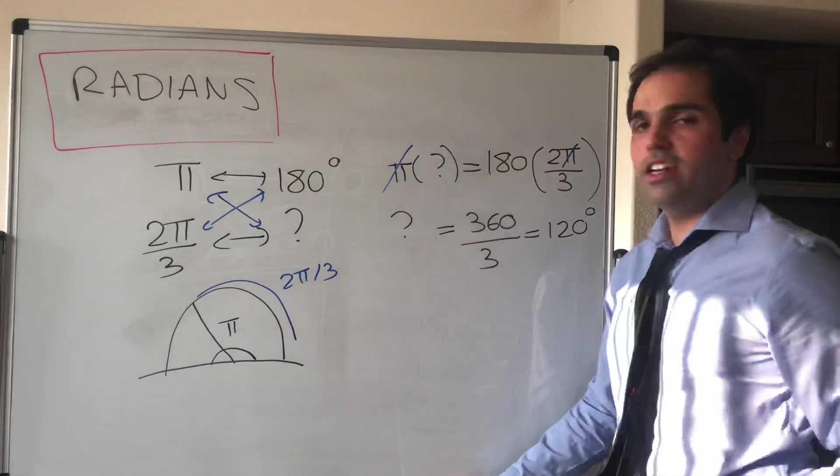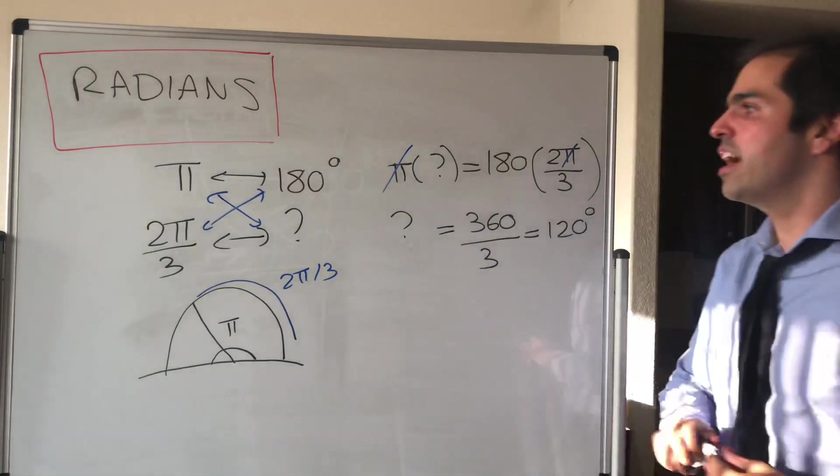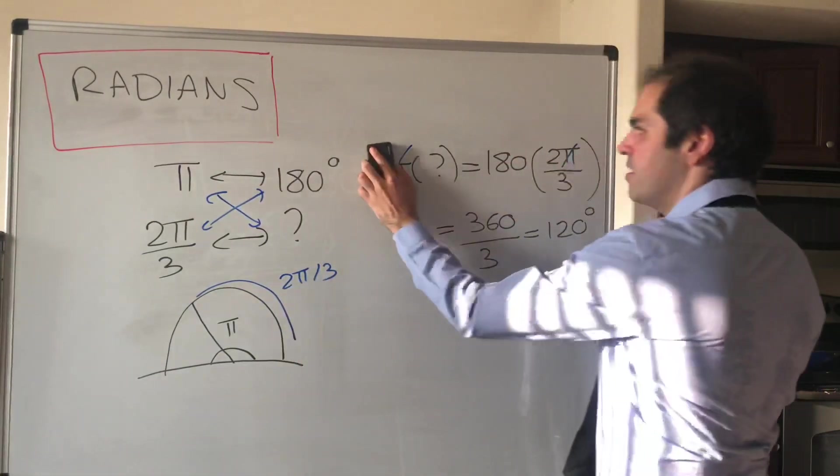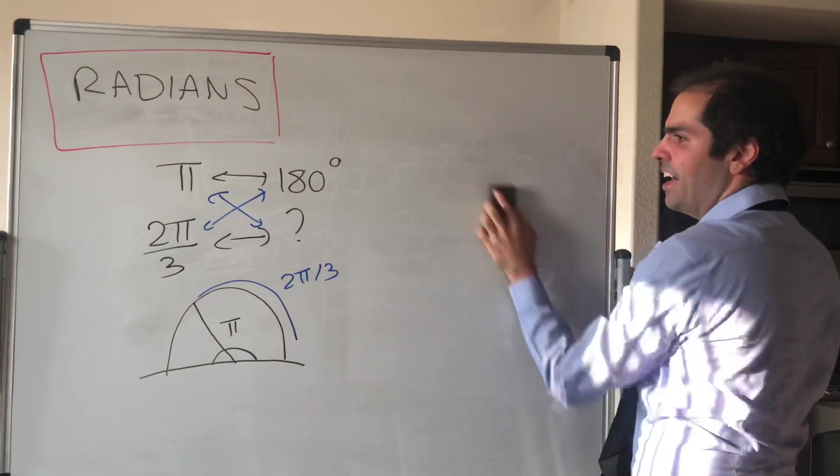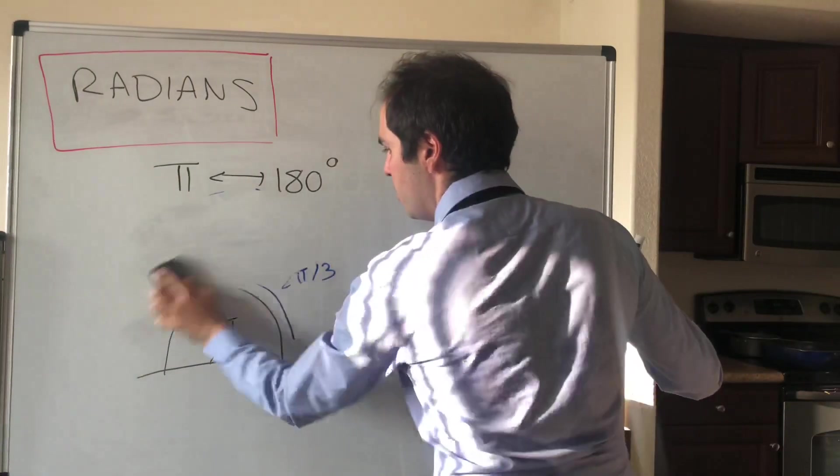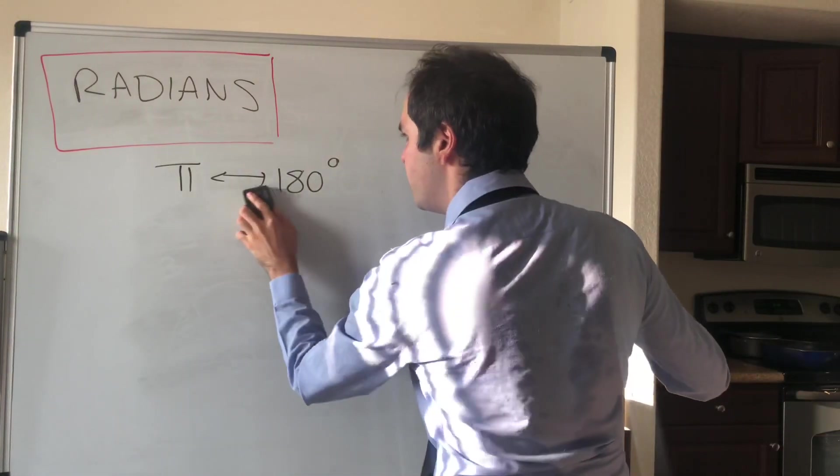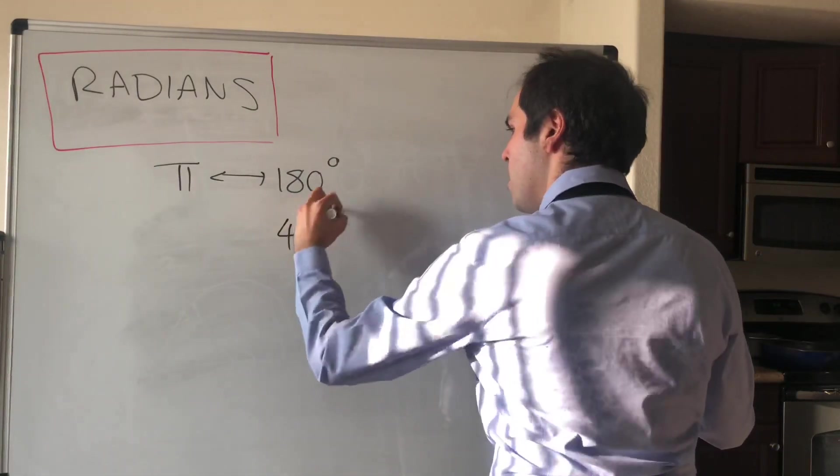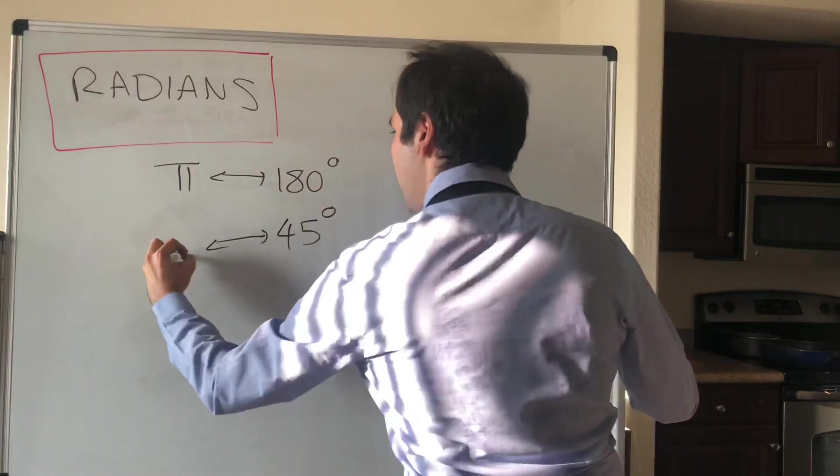And of course we can also do the reverse exercise. So given a degree, how can you convert to radians? Well, it's again the exact same thing. So let's see, for instance, 45 degrees. How many radians is that?